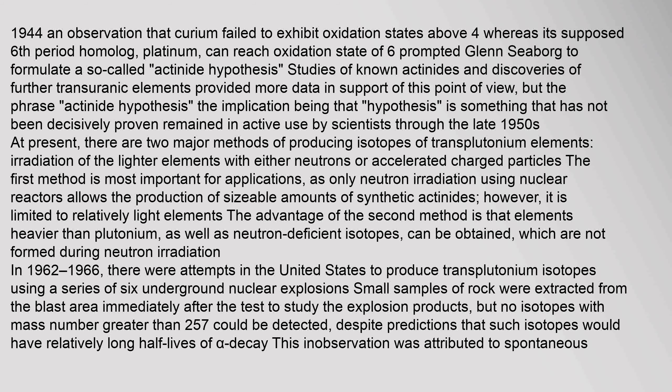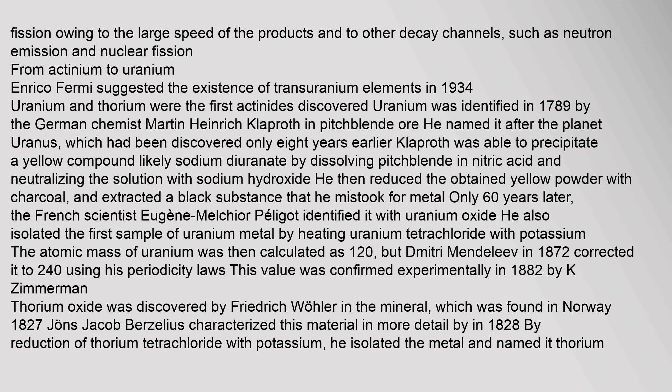At present there are two major methods of producing isotopes of transplutonium elements: irradiation of the lighter elements with either neutrons or accelerated charged particles. The first method is most important for applications, as only neutron irradiation using nuclear reactors allows the production of sizable amounts of synthetic actinides; however, it is limited to relatively light elements. The second method allows production of elements heavier than plutonium as well as neutron-deficient isotopes. In 1962 to 1966, there were attempts in the United States to produce transplutonium isotopes using a series of six underground nuclear explosions, but no isotopes with mass number greater than 257 could be detected.